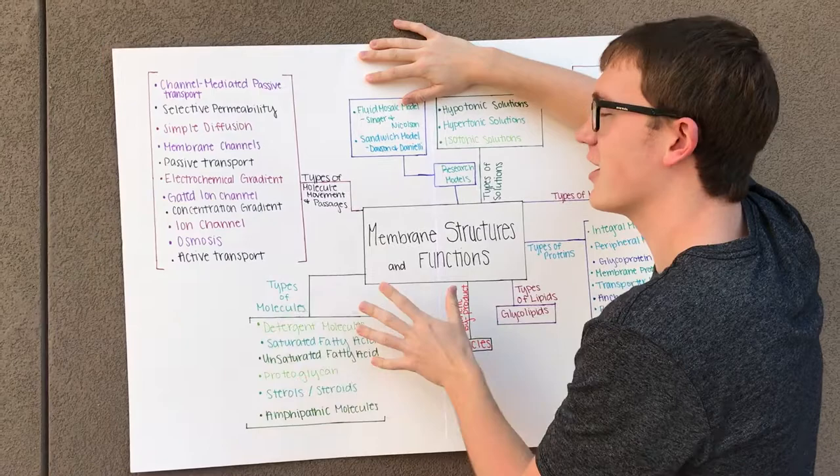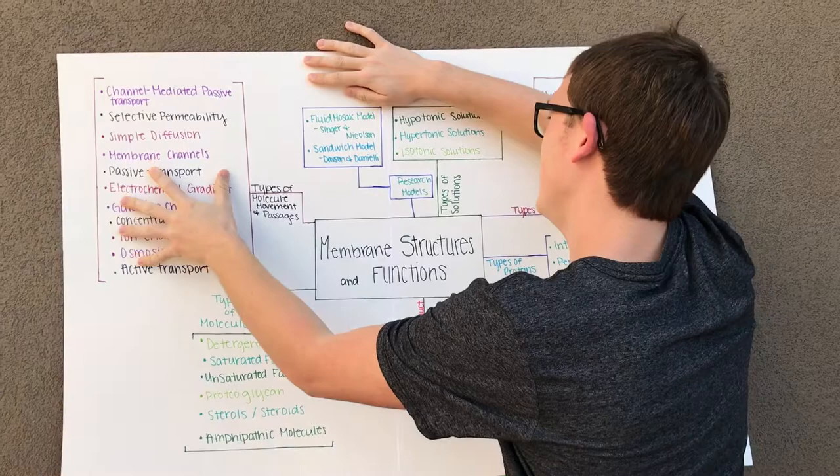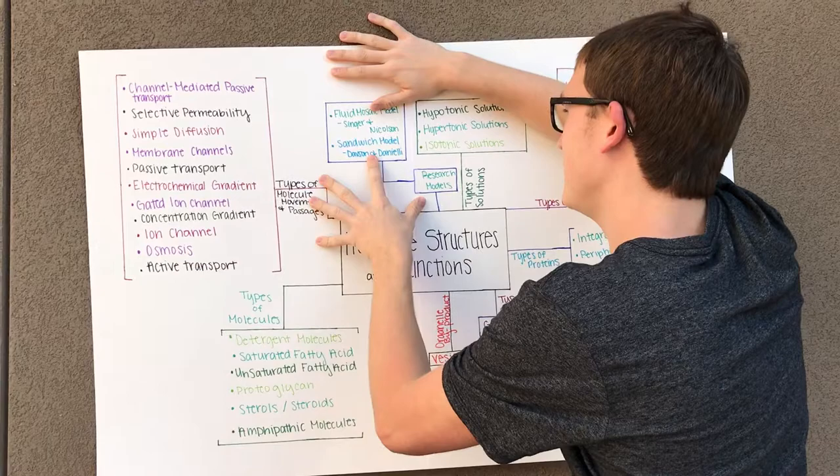So first we put our research type models and you have your fluid mosaic model by Singer and Nicholson and then your sandwich model by Davidson and Danelli.